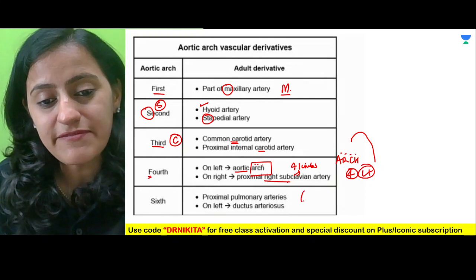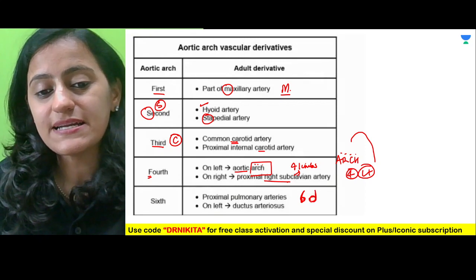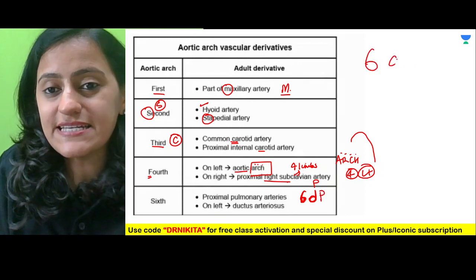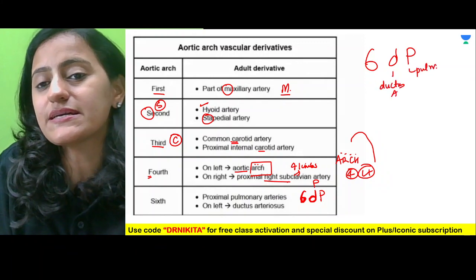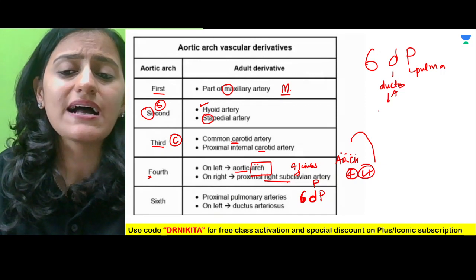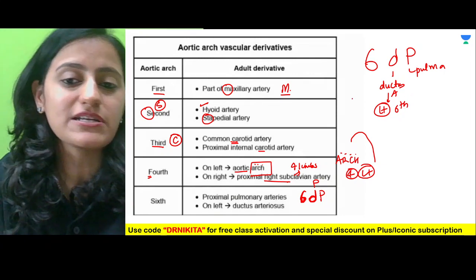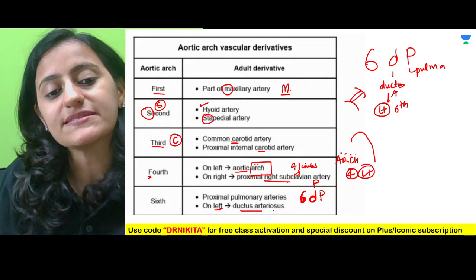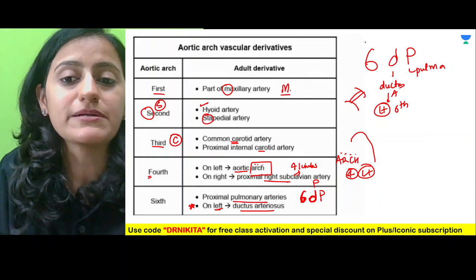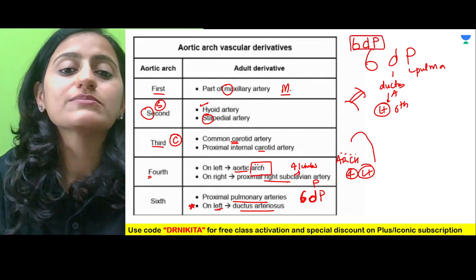Sixth — basically when I write six and invert it, it becomes like a D, and this D is also like a P. So six gives us D and P, meaning the ductus arteriosus and the pulmonary arteries. Remember the ductus arteriosus is from the left sixth arch, not the right sixth arch, because the aorta is present on the left side. The ductus connects the pulmonary artery with the aorta, so it is the left sixth arch — ductus arteriosus and the proximal pulmonary arteries.